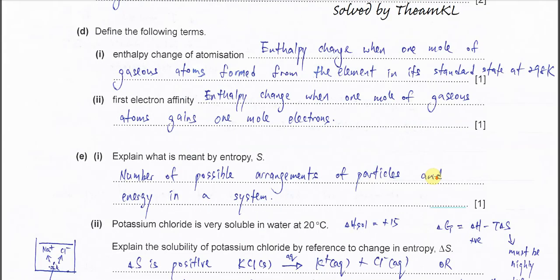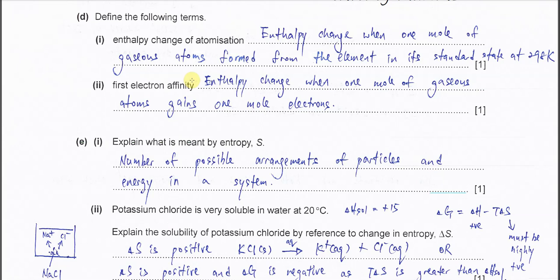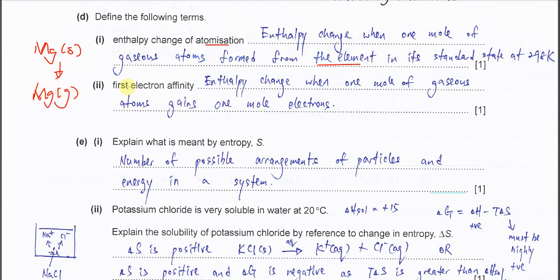Part D: define the following terms. Part one — enthalpy change of atomization: the enthalpy change when one mole of gaseous atoms is formed from the element in its standard state. For example, magnesium in solid form is atomized to form magnesium gaseous atoms — it must start in its standard state, which is solid. Part two — first electron affinity, EA1: the enthalpy change when one mole of gaseous atoms each gains one mole of electrons. For example, gaseous chlorine atoms gain one mole of electrons to form gaseous chloride ions. This is normally applicable to non-metals such as Group 17 elements.